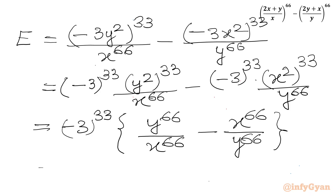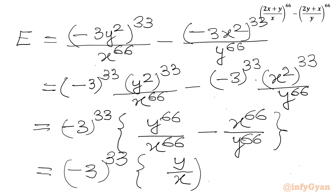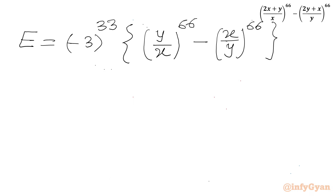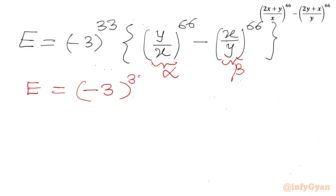Taking (−3)^33 common, we get (−3)^33 times [(y/x)^66 − (x/y)^66]. We introduce alpha equal to (y/x)^66 and beta equal to (x/y)^66, so our required expression becomes (−3)^33 times (alpha − beta).